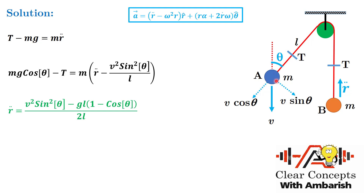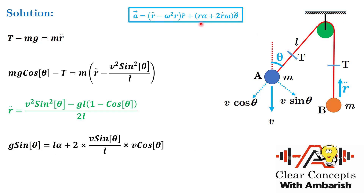For the angular acceleration of A about the pulley: the tangential force on A is mg sin theta, so the net tangential acceleration is g sin theta. Using the tangential acceleration formula: r alpha + 2 r dot omega = g sin theta. Here r dot is the velocity of separation of A from the pulley, which is v cos theta, and omega = v sin theta / l.